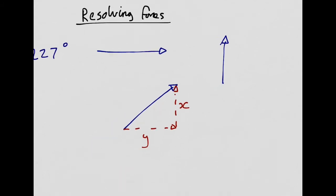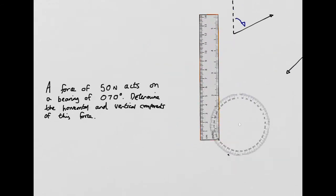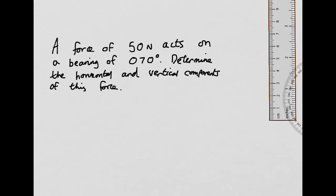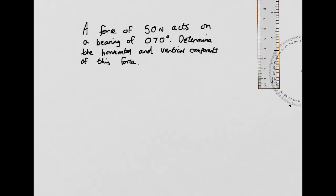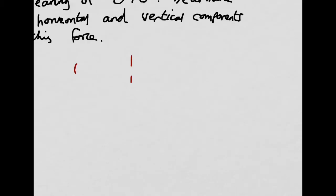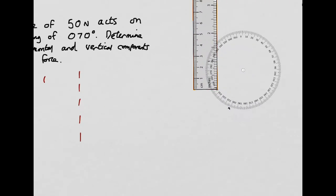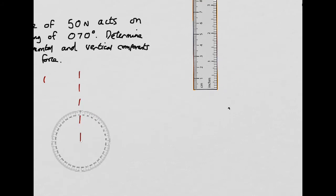Now let's have a look at an example here. We've got a 50 newton force acting at a bearing of 070 degrees. Determine the horizontal and vertical components of this force. So determining the horizontal and vertical components. Now first things first, it's always sometimes a good idea to draw your vertical line, a dashed line vertically. Now I'm going to take my protractor, my fancy 360 degree protractor, and I'm going to measure the bearing to start with.